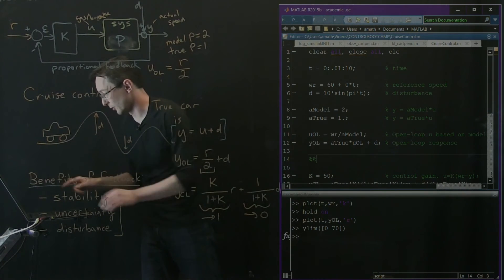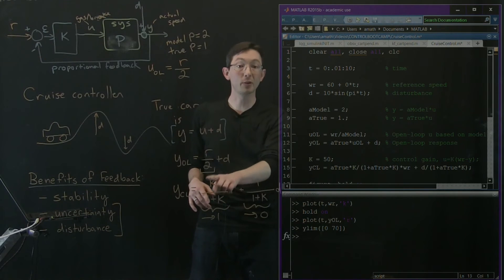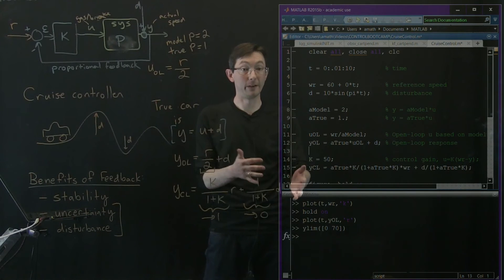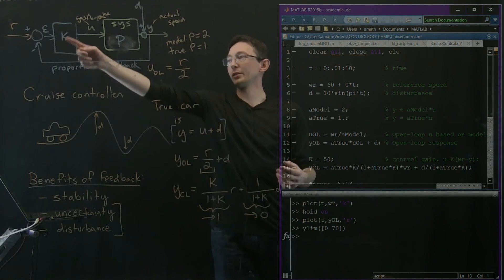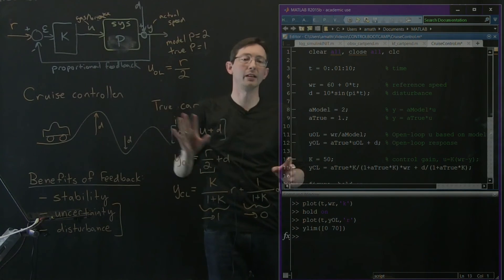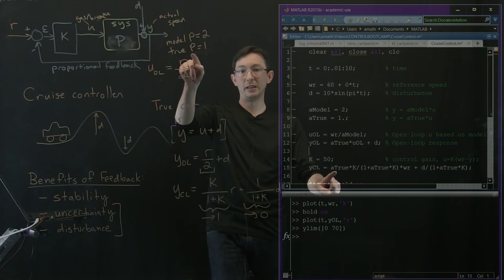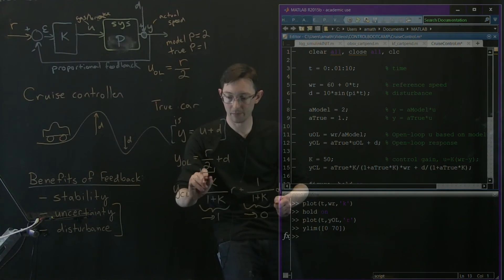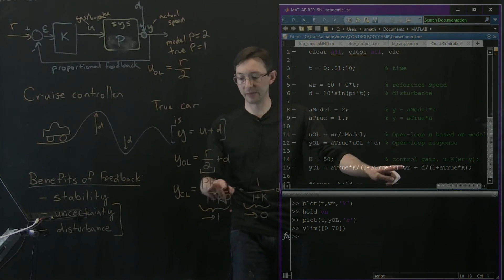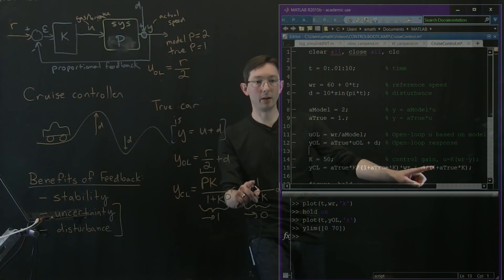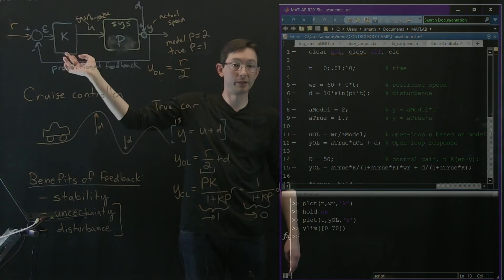But now let's compute the closed loop, the closed loop control. And in this example, I'm going to choose a proportional gain of K equals 50. So that's going to get us within about 2% of the reference value. And it's also going to reduce the disturbance by also about a factor of 50. 1 over 51. So I'm choosing K equals 50 and I'm plugging in this formula. In MATLAB, you could actually simulate the system dynamically in Simulink or using the feedback command. But for now, I know that I've derived the closed loop. So I take my closed loop model is the true transfer function. So P equals 1 times K. So this is P true here, PK over 1 plus PK. So PK over 1 plus PK times my reference plus 1 over PK times my disturbance. There's a PK here, but P is 1 for the true automobile. The true automobile transfer function is just Y equals U.